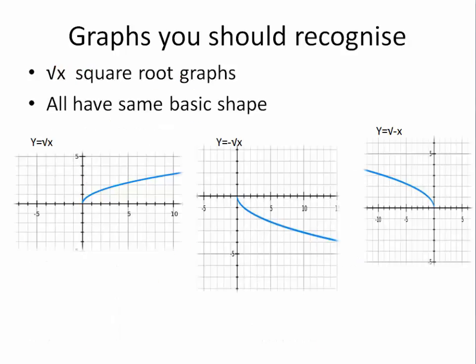Square root of x graphs. They all have the same basic shape. Start at zero, zero. And a smooth curve upwards. Minus square root of x. A flip in the x axis. And square root of minus x. A flip in the y axis.